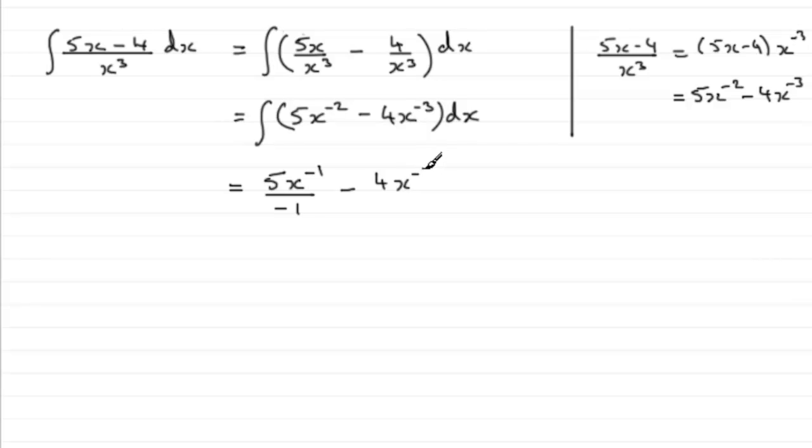Then for this next term we've got -4, add 1 to the power so it's x^(-2) and divide by that new power -2, and don't forget the constant of integration plus c. Just need to tidy this up now. 5 divided by -1 is -5.